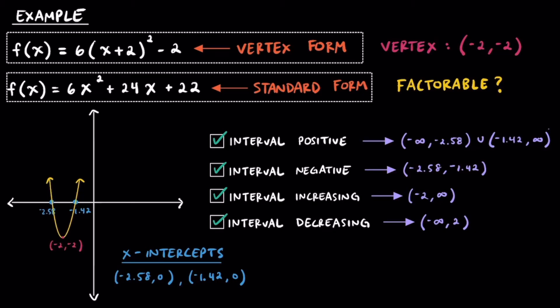As long as you know where the x-intercepts are, and they can be either rational or irrational, and you know where the vertex is, you can find out all four of these intervals. If you found this video helpful, you can give it a thumbs up, and as always, keep up the great work.